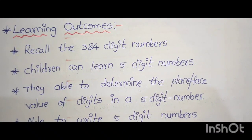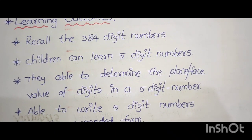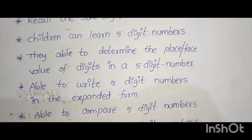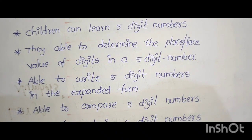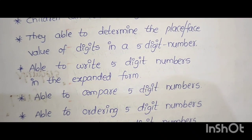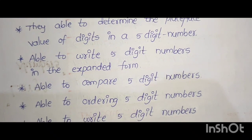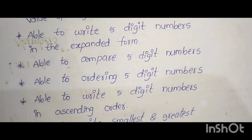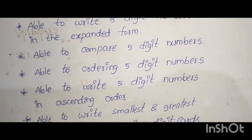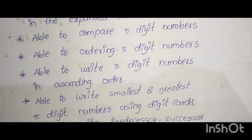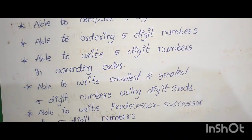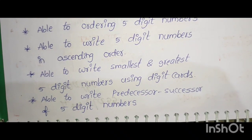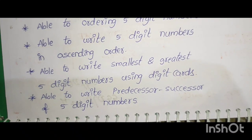Learning Outcomes: Recall the 3 and 4-digit numbers. Children can learn 5-digit numbers. They are able to determine the place, face values of digits in a 5-digit number. Able to write 5-digit numbers in the expanded form. Able to compare 5-digit numbers. Able to order 5-digit numbers. Able to write smallest and greatest 5-digit numbers using digit cards. Able to write predecessor-successor of 5-digit numbers.